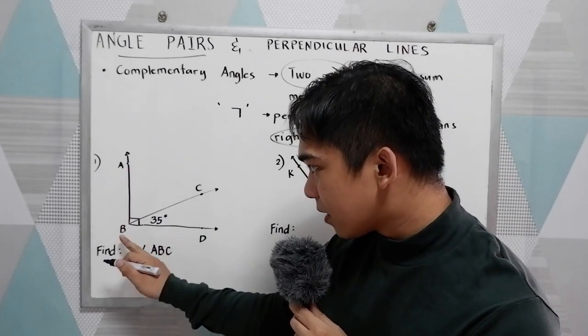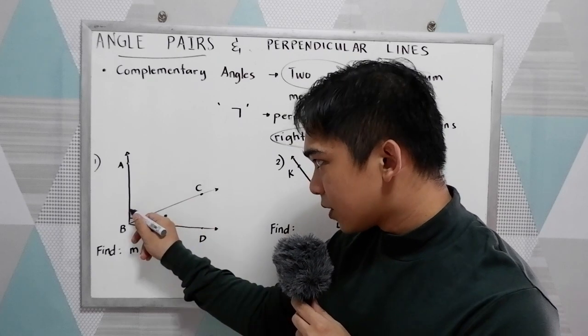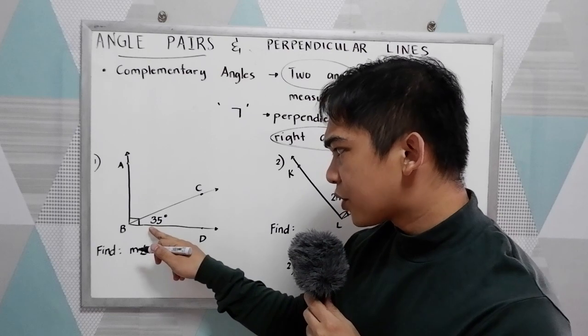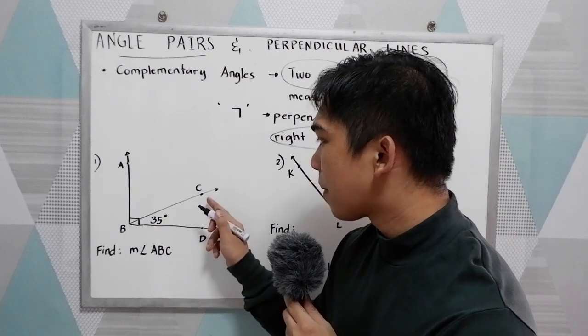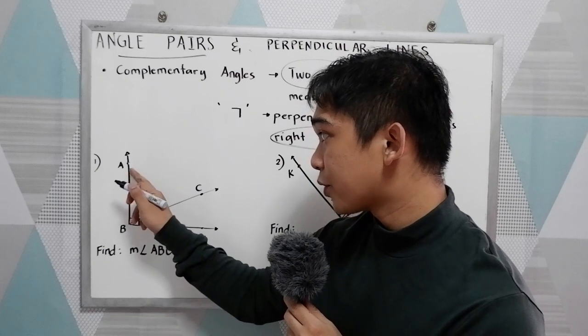That means the sum of the two angles here is equal to 90 degrees. So we are going to find measure angle ABC. This angle, measure angle ABC. We have the 35, which is the measure of CBD.